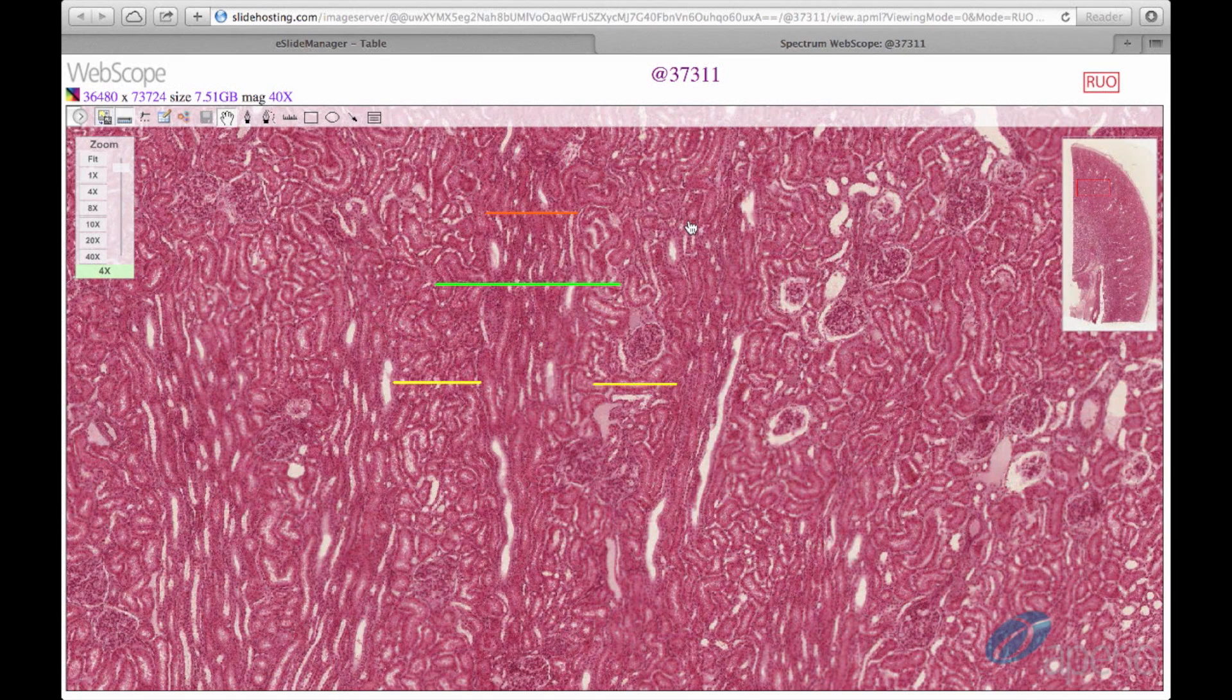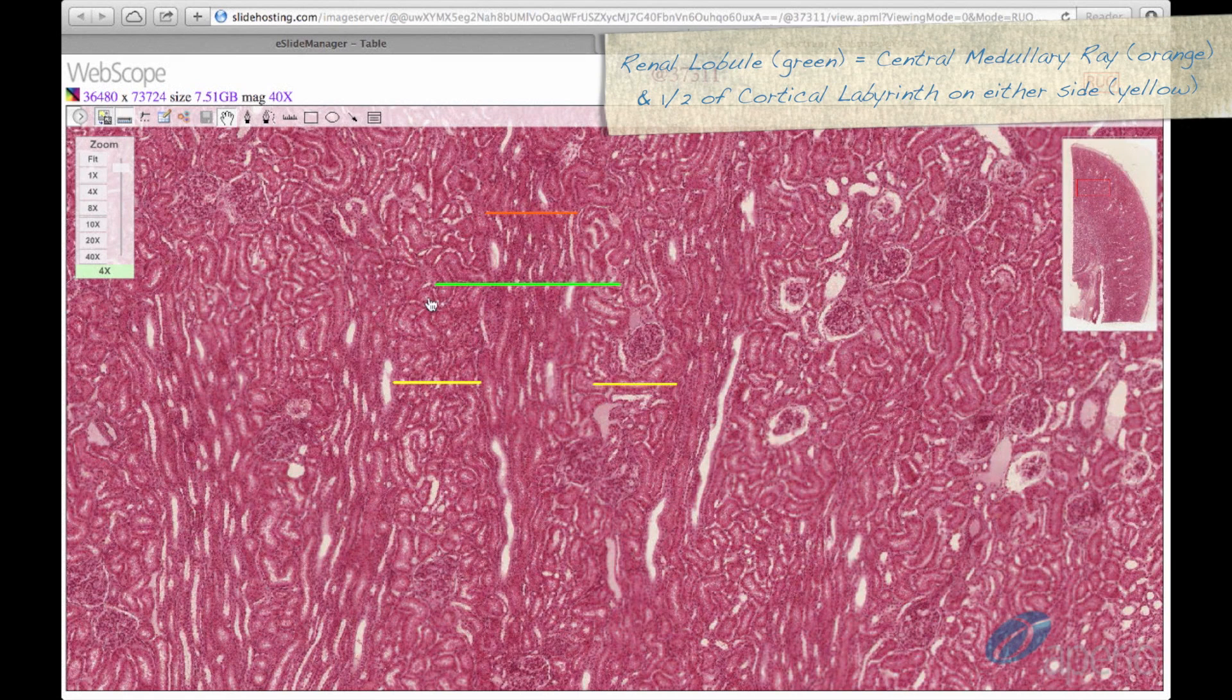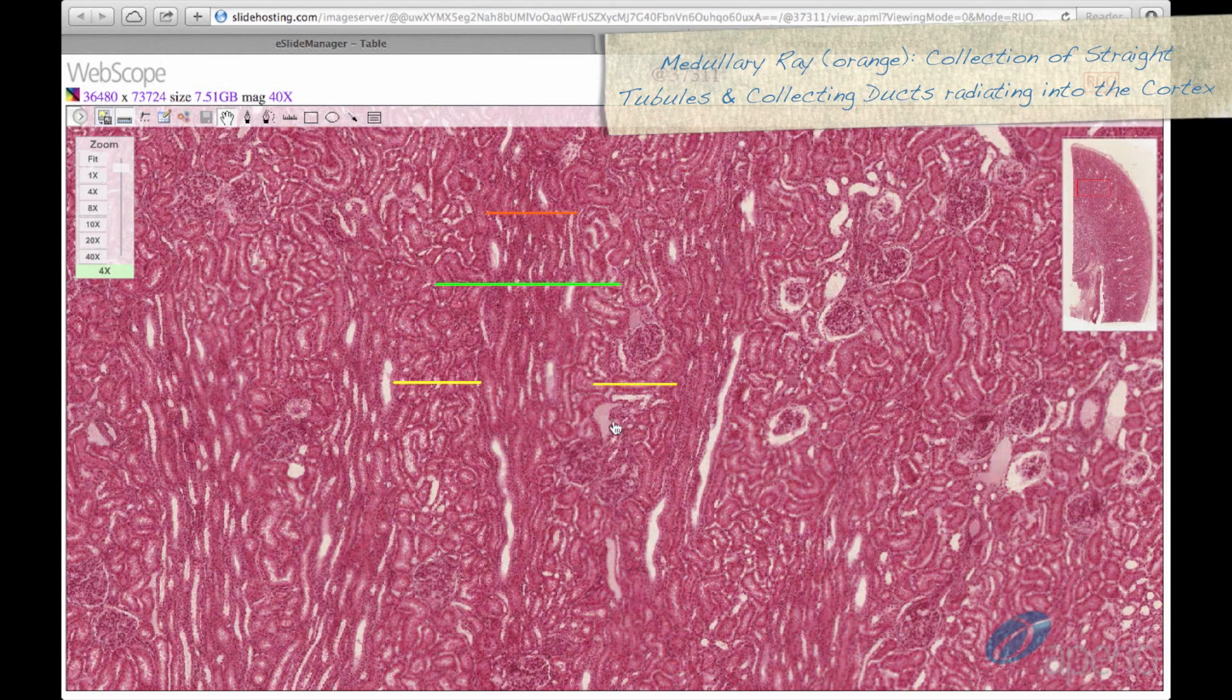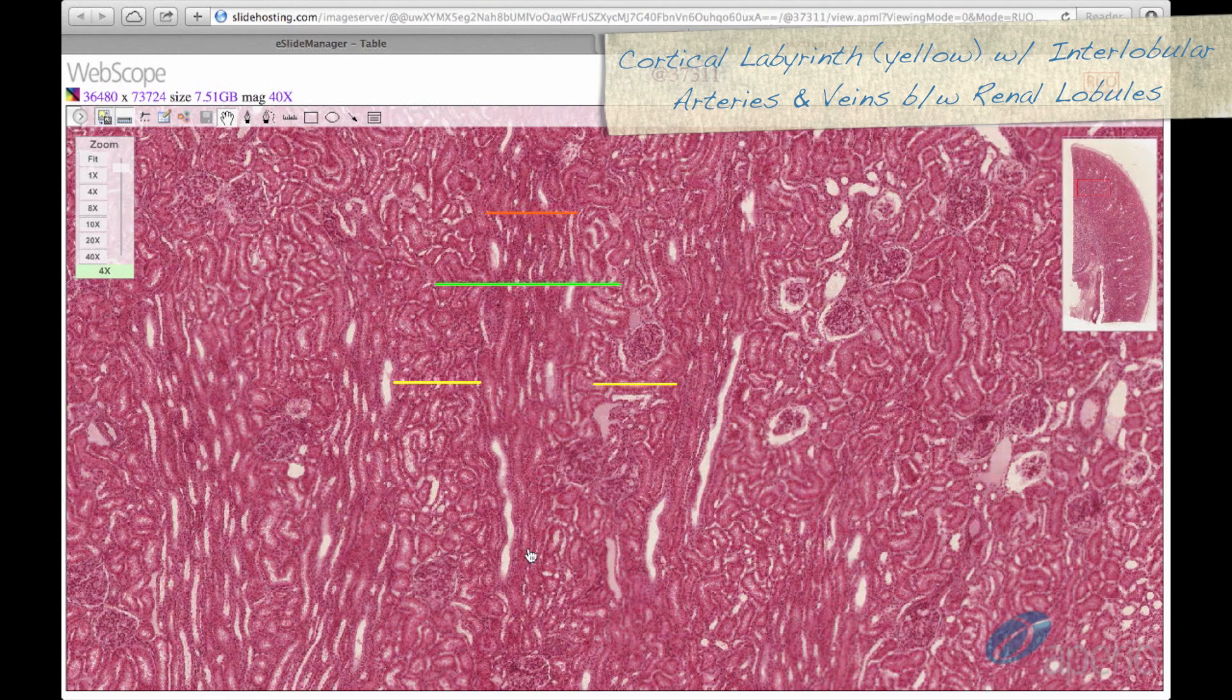We have zoomed in on a different section of the slide so we can identify the renal lobule, seen here spanned by the green line. The renal lobule is composed of a central medullary ray and one half of the cortical labyrinth on either side. The medullary ray is a collection of straight tubules and collecting ducts radiating into the cortex. It is seen here spanned by the orange line. The cortical material, or labyrinth, is divided equally between two adjacent renal lobules and can be seen here spanned by the yellow lines.